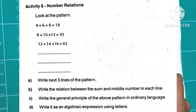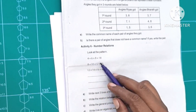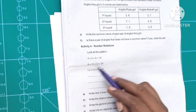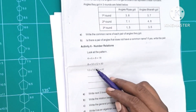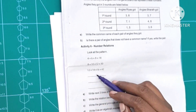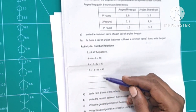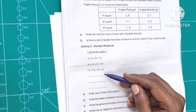The number of activities involves number relations. 4 plus 6 plus 8 plus 18; 8 plus 10 plus 12 equals 30; 12 plus 14 plus 16 equals 42. This is the pattern we are exploring.